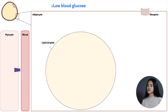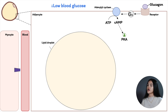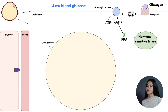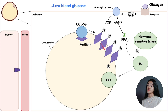When glucagon is released, it's going to bind to its receptor in the membrane of the fat cell adipocyte, and it's going to stimulate adenyl cyclase via a G protein. When it does that, ATP is going to produce cyclic AMP, which is an intracellular second messenger. Cyclic AMP — or cAMP — is going to trigger protein kinase A, because protein kinase is cyclic AMP dependent. When activated, protein kinase A is going to phosphorylate hormone-sensitive lipase and also the perilipin molecules on the surface of the lipid droplet.